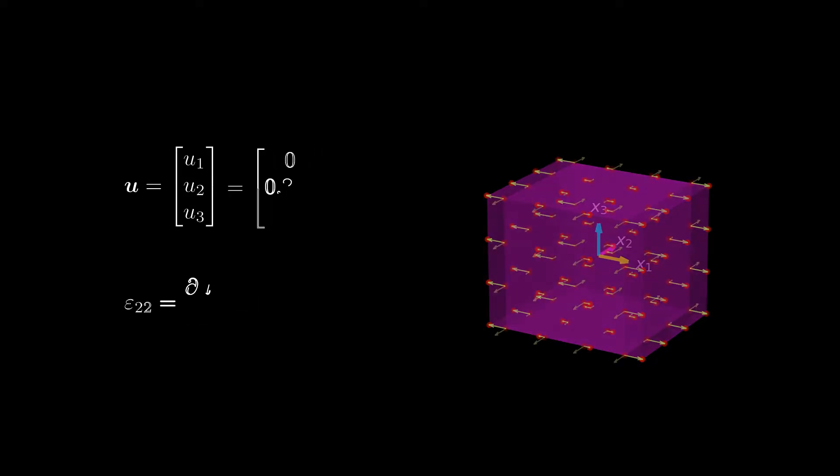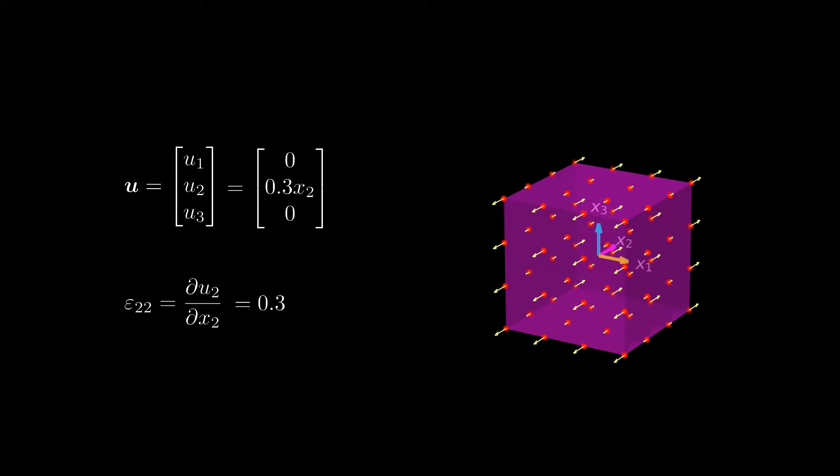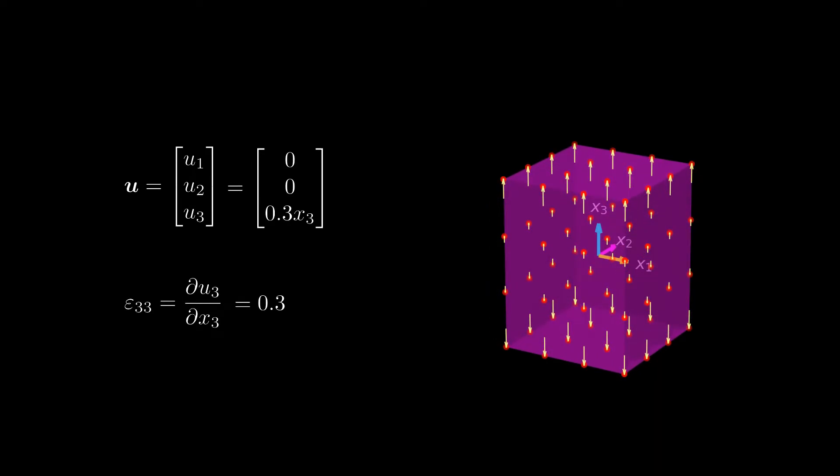We can do the same for the epsilon 22 component and observe that we get an elongation in x2 direction. Finally for the epsilon 33 component we get an elongation in x3 direction.